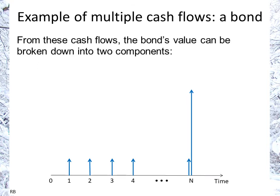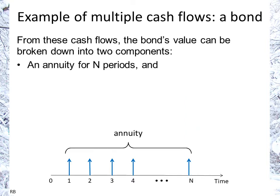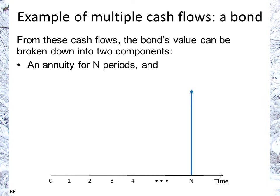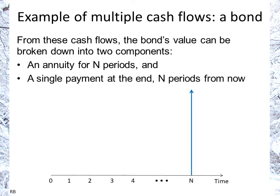The bond's value can be broken down into two components. The first is an annuity for n periods. The other portion is the single payment at the end — n periods from now.